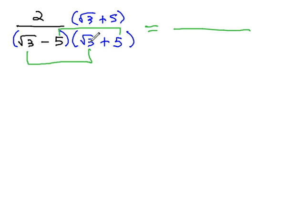Root 3 times root 3, that's two threes under a radical, so we pull a 3 out. Nothing left in the radical. Minus 5 times 5 is 25. And notice we have no radical left in the denominator.